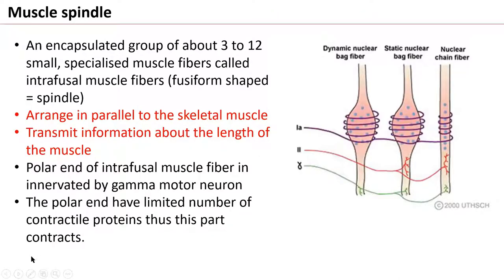Let us discuss proprioception and the muscle spindle. The muscle spindle is an encapsulated group of about 3 to 12 small specialized muscle fibers called intrafusal muscles. These are fusiform-shaped structures called muscle spindles.